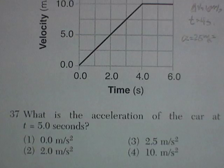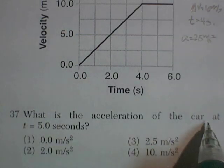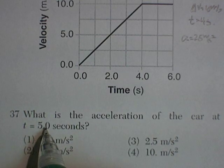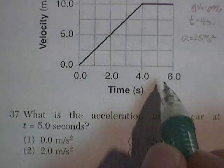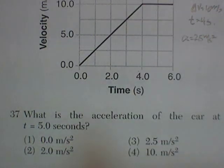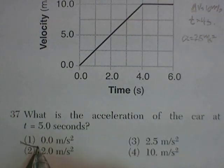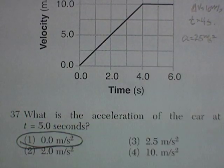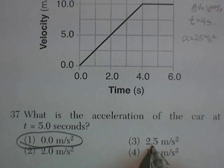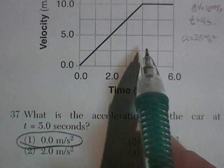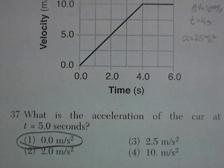Then the car goes at 10 meters per second for the next 2 seconds. Question 37: What's the acceleration of the car at t equals 5 seconds? At t equals 5 seconds, it's not accelerating — it's traveling at 10 and continues at 10. The acceleration is 0. Trick question — don't fall for it. The 2.5 meters per second squared was the acceleration up to 4 seconds. It was a trap.